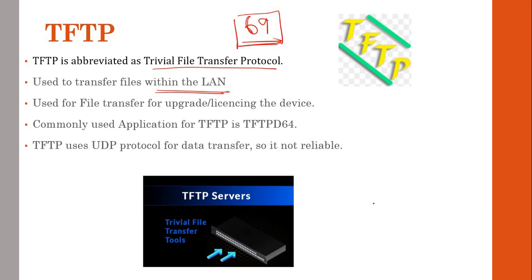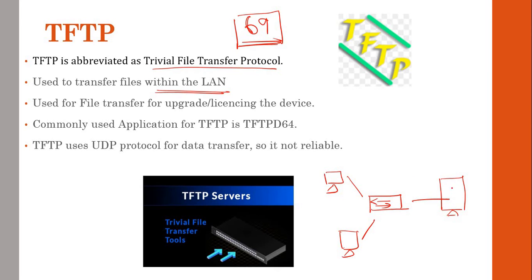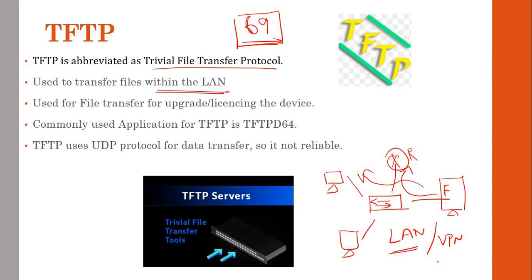TFTP is used for communication within the LAN. For example, if you have a switch, computer, and server connected, you can use a TFTP server to perform firmware upgrades or file transfers on routers and other devices. It can also work through VPN connectivity. You can use it for upgrade, downgrade, or file transfer within the same LAN.